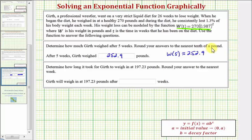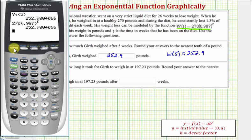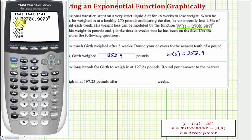Now for the second question, we want to determine how long it took for Girth to weigh in at 197.23 pounds. And as I mentioned earlier, we're going to be solving this graphically. So going back to the calculator, we'll press Y equals. To go down to Y2, we'll press enter.